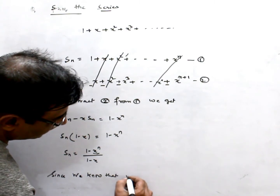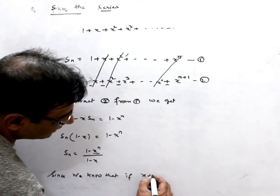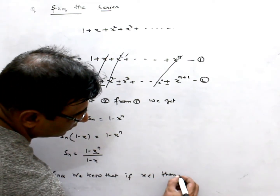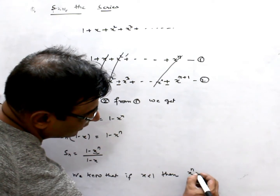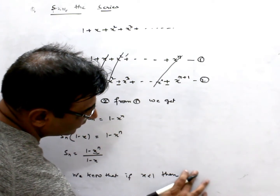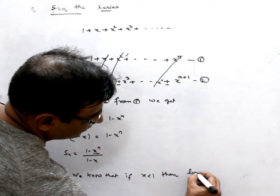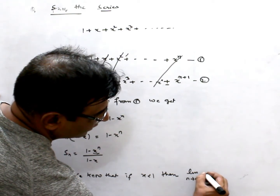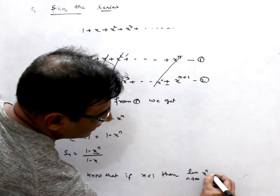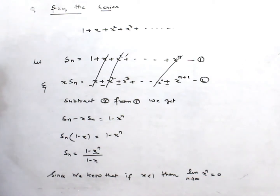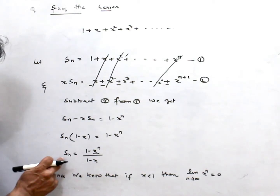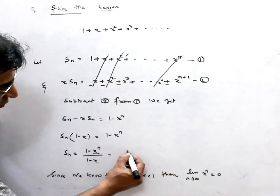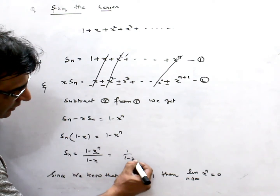Since we know that if the absolute value of x is less than 1, then the limit as n approaches infinity of x to the n is 0. So in this case, Sn becomes 1 divided by (1 minus x).